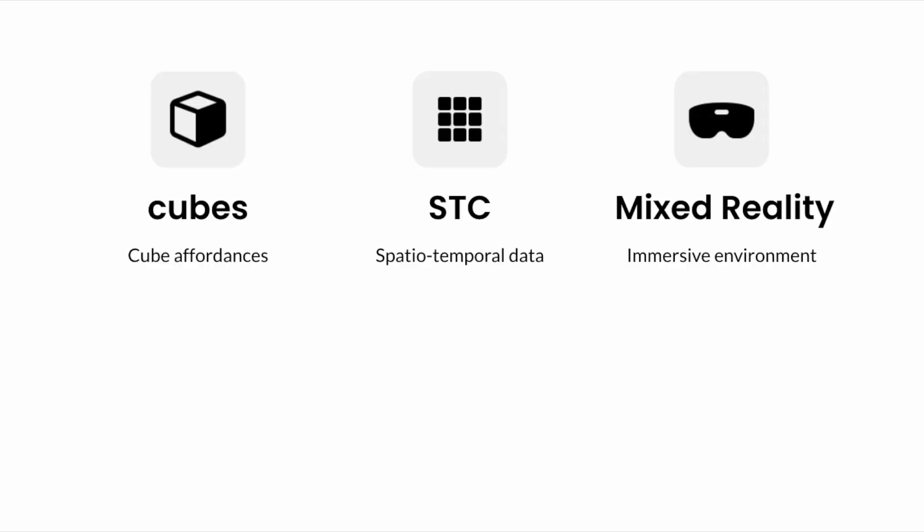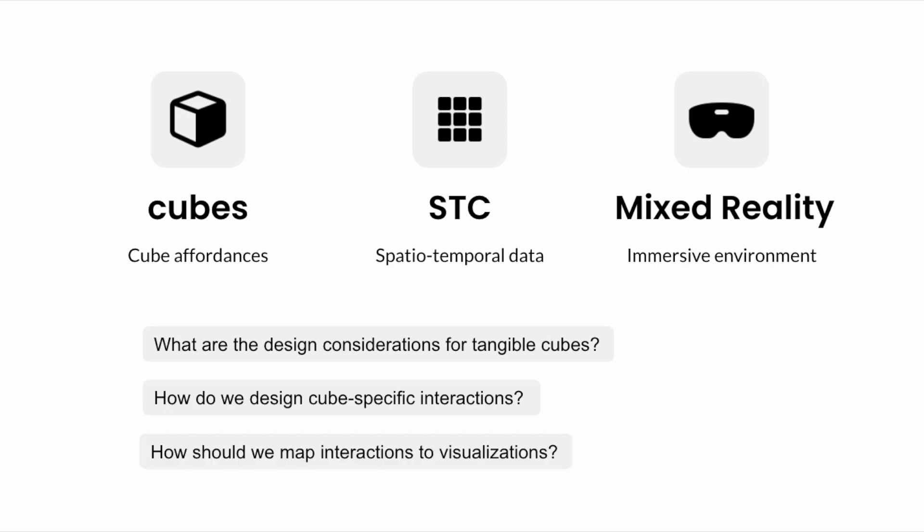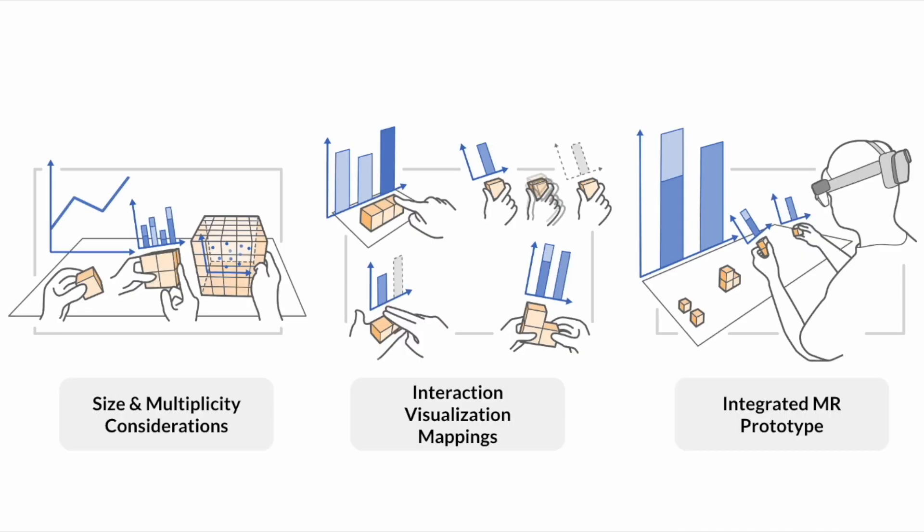However, there lacks a unifying framework of interaction outlining how cubes can be used to represent complex data like in a space-time cube. What are the design considerations for tangible cubes? How do we design cube-specific interactions? And how should we map interaction to visualizations? We attempt to answer these questions in this work by proposing a design space and investigating the size and multiplicity considerations, the interaction and visualization mappings, and finally presenting an integrated mixed reality prototype.